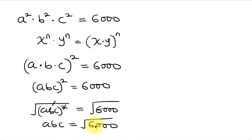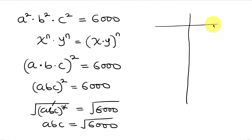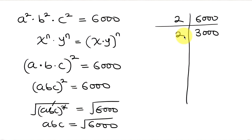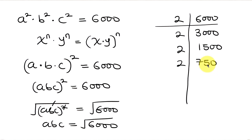Our next step is to break down 6000 using the division method. Starting with 2: 6000 divided by 2 is 3000; 3000 divided by 2 is 1500; 1500 divided by 2 is 750; 750 divided by 2 is 375.